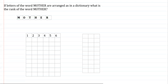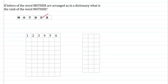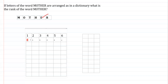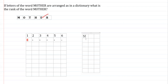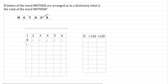Whenever letters are given and you are asked to arrange them in dictionary order, they should be written alphabetically. Looking at these letters, the first letter alphabetically is E. Let's fix E at the first place — we are left with five slots, which can be filled in 5! ways. Five factorial equals 120, so there are 120 words beginning with E.